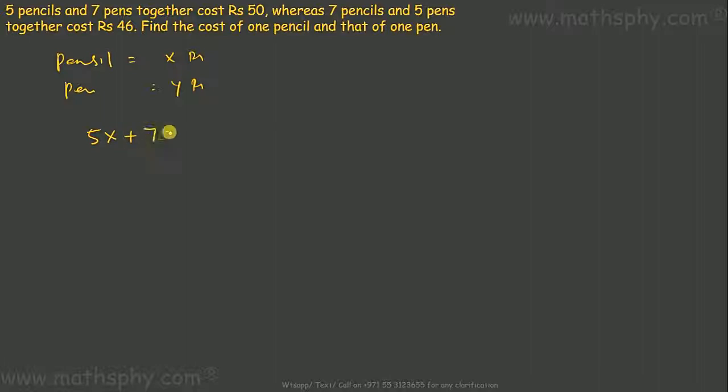Plus seven pens at the rate of y rupees costs total 50. That's the first equation. Seven pencils at the rate of x plus five pens at the rate of y costs 46. That's the second equation.